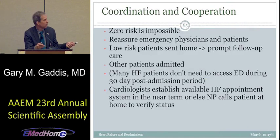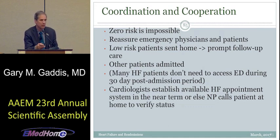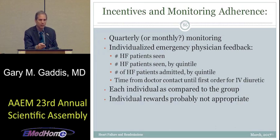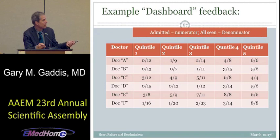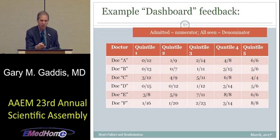Zero risk is impossible — the lowest risk I can describe is 0.3%. But if you get patients prompt follow-up, you're building a good system in their best interest. Some patients actually prefer to be sent home rather than admitted. This is a tool you can build collaboratively with your cardiologist. You could also use it to monitor your doctors through quarterly reports — telling a physician how many of their patients were in quintile 1 or 2 and how many they admitted, compared to their peers.